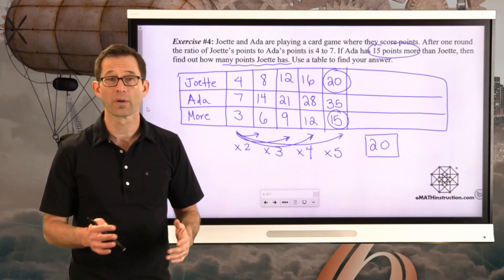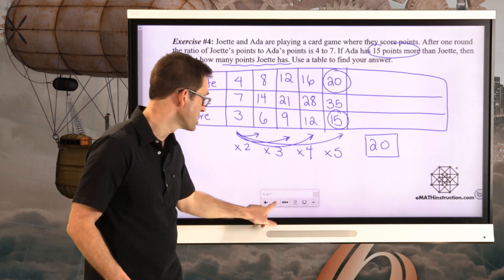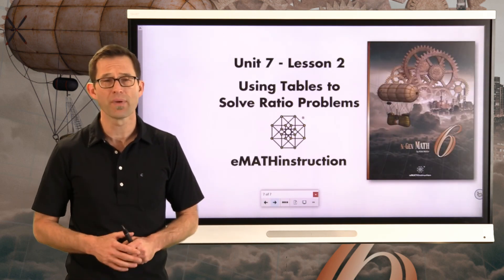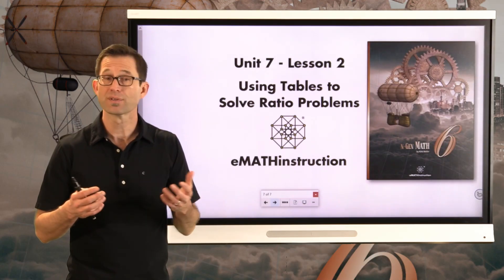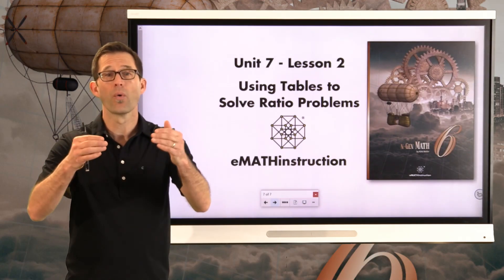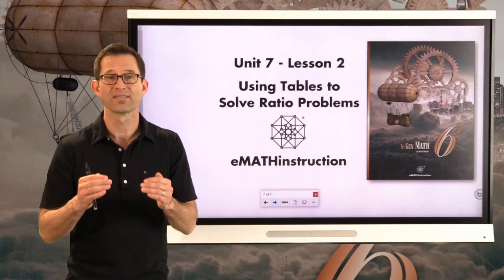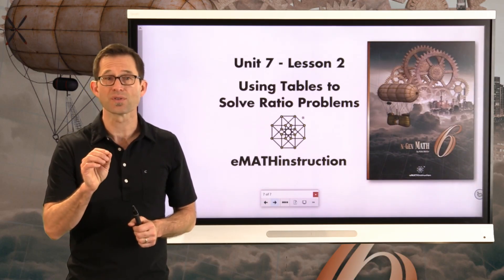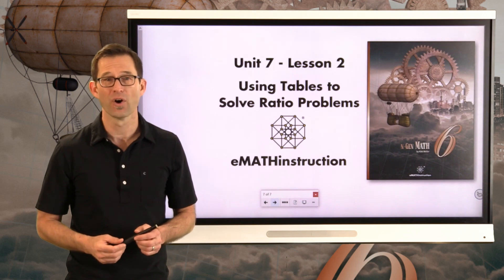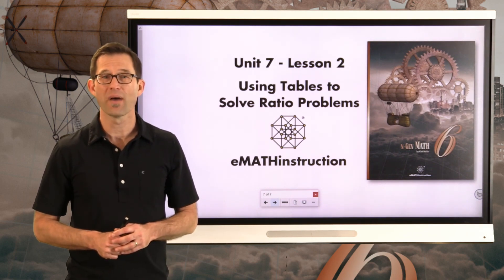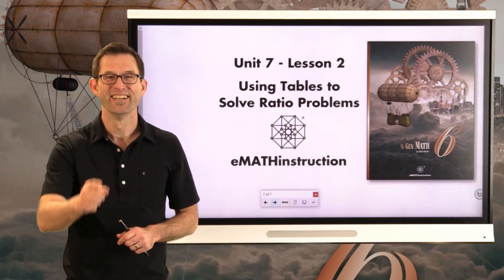We'll look at shortcuts for this in future lessons, but for now, tables are a great way to visualize ratios and especially equivalent ratios. A ratio compares how many of one thing we have versus another, and those ratios can be multiplied by whole numbers or fractions to scale them up or down. Most of what we did today was scaling a ratio up using tables to keep track. Thank you for joining me for another NGenMath 6 lesson by eMath Instruction. My name is Kirk Weiler — keep thinking and keep solving problems.